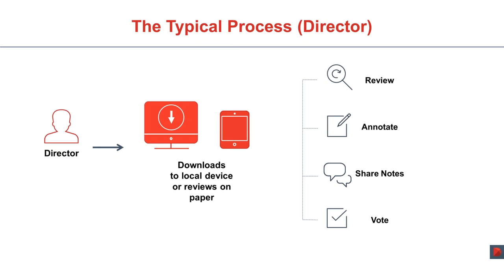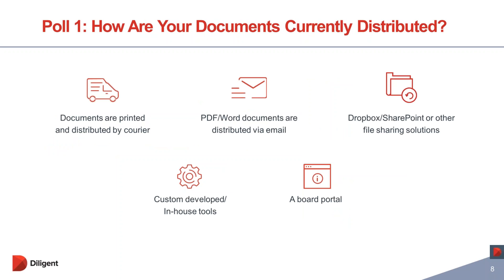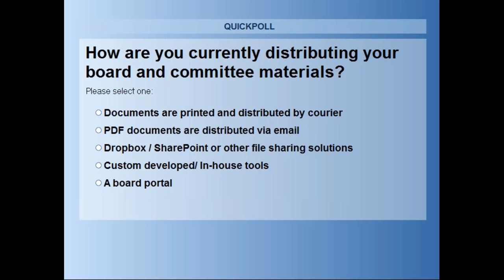And now we are going to conduct a poll. We are really interested in knowing how you are currently distributing your board materials. There are five options: the documents are printed and delivered by courier; they are created as a PDF and sent via email; or you may be using Dropbox or SharePoint for file sharing; a custom developed in-house tool; or you are currently using a board portal such as Diligent.